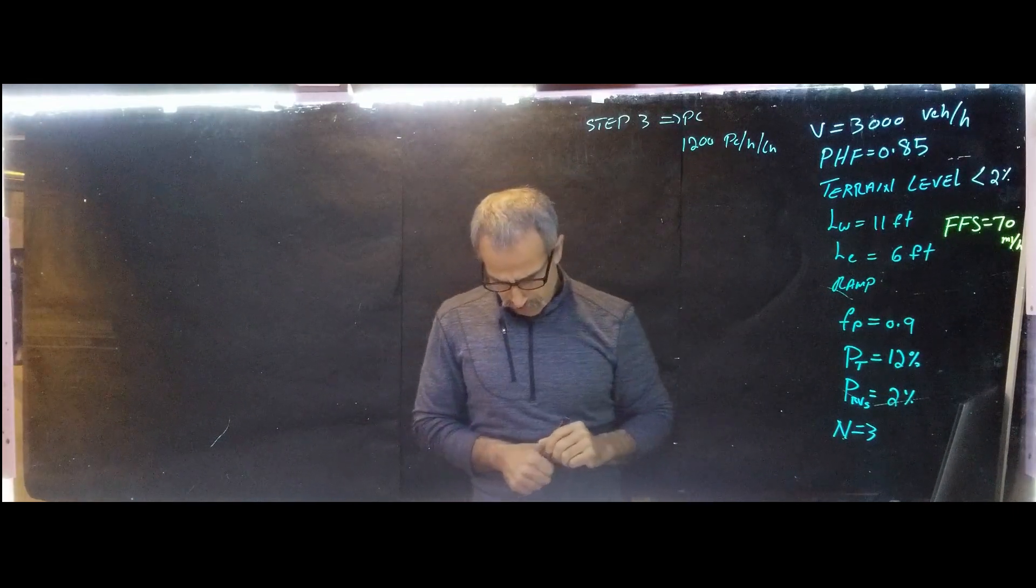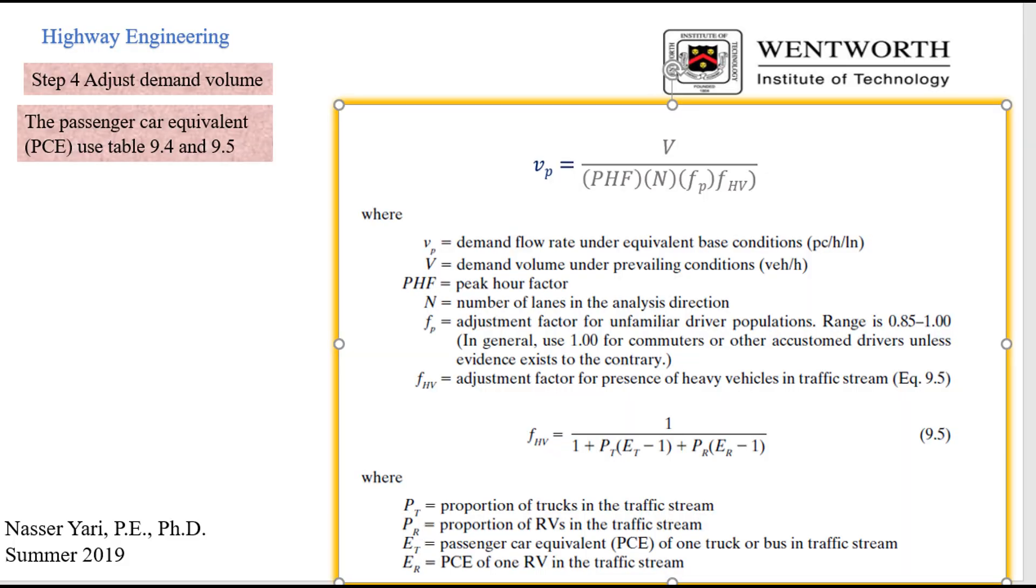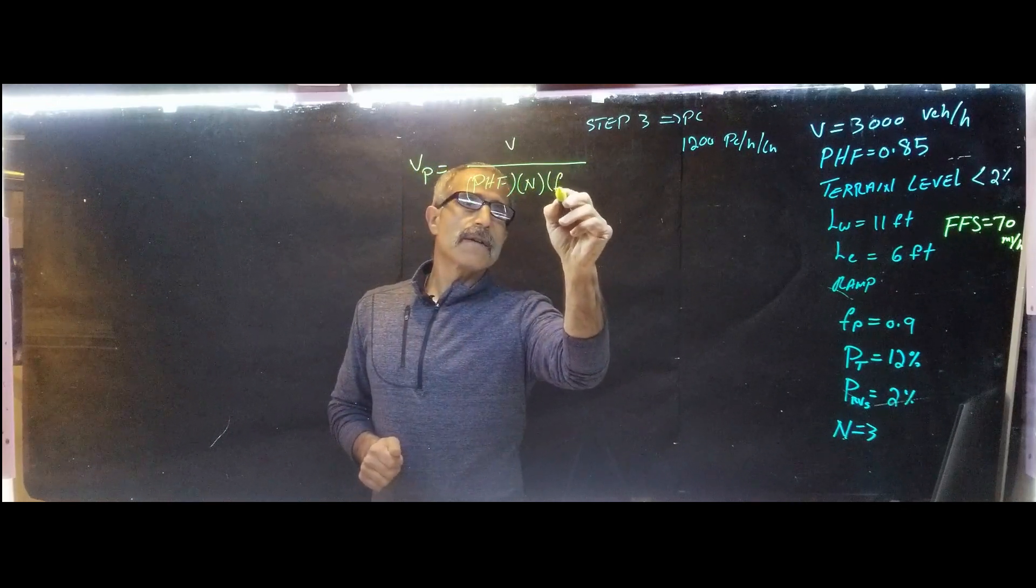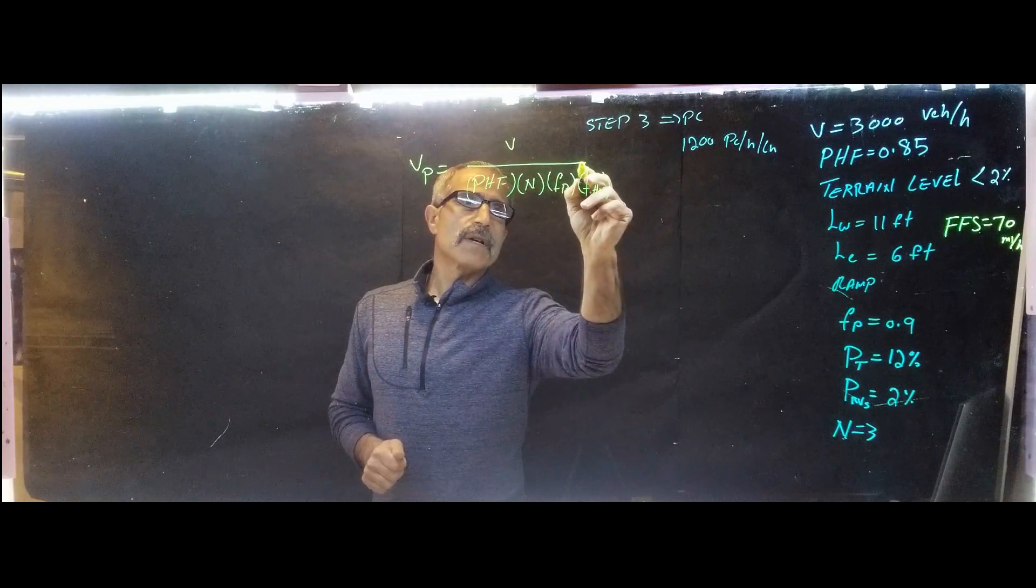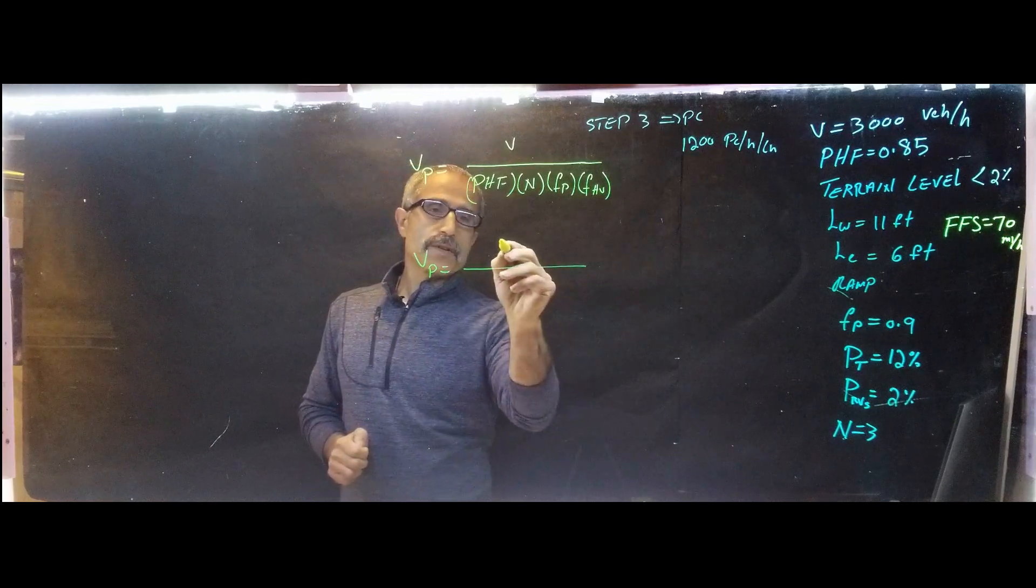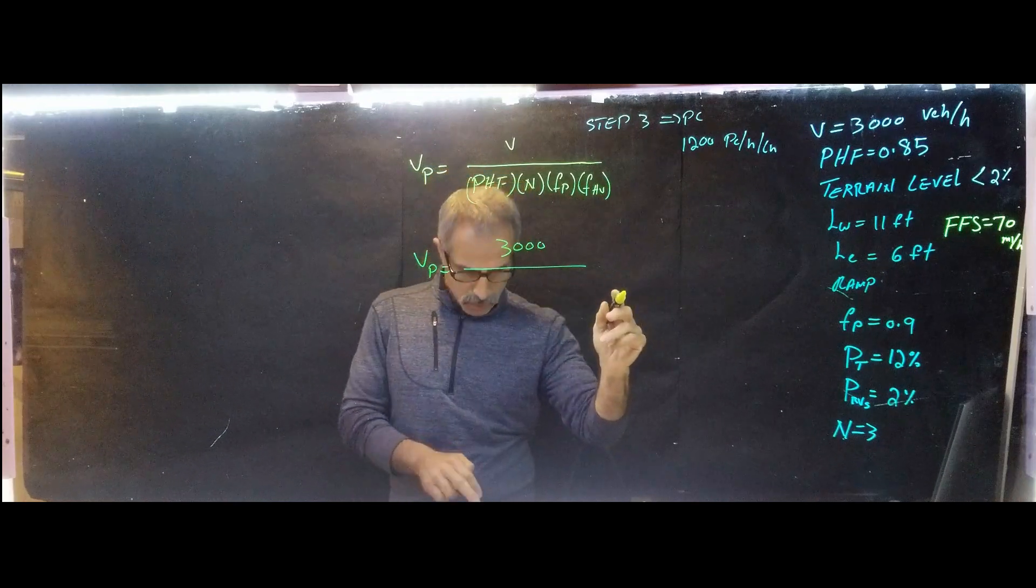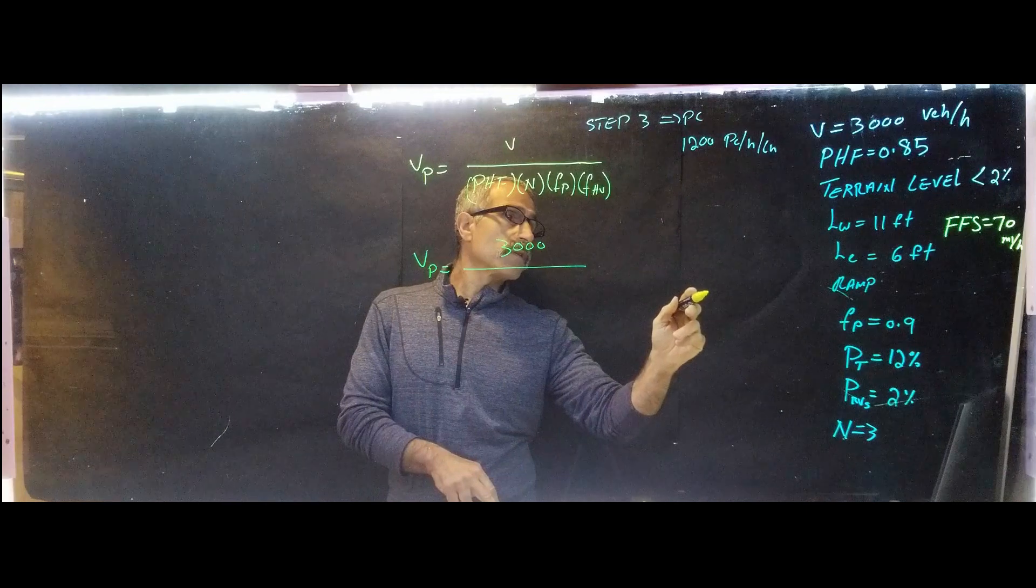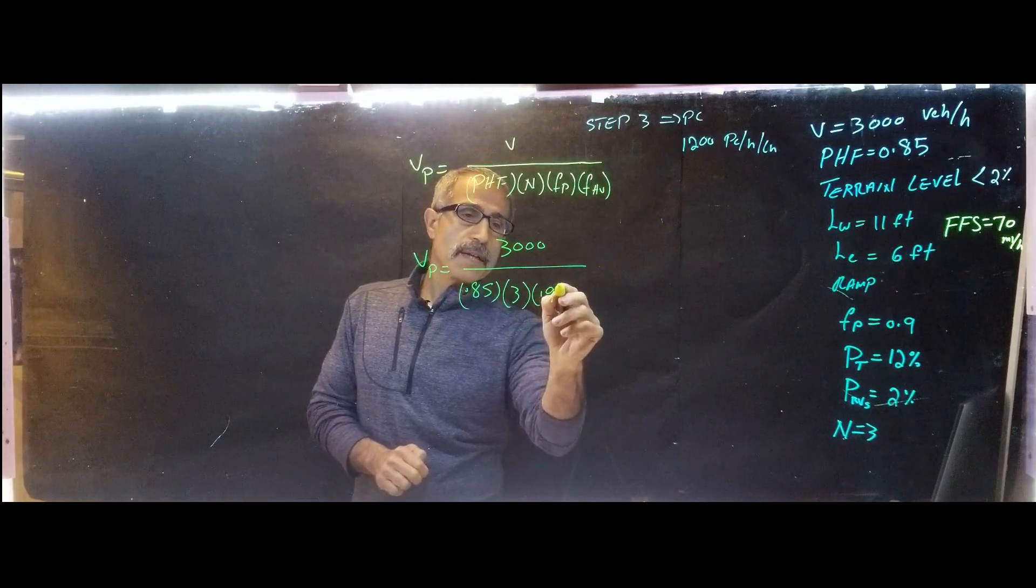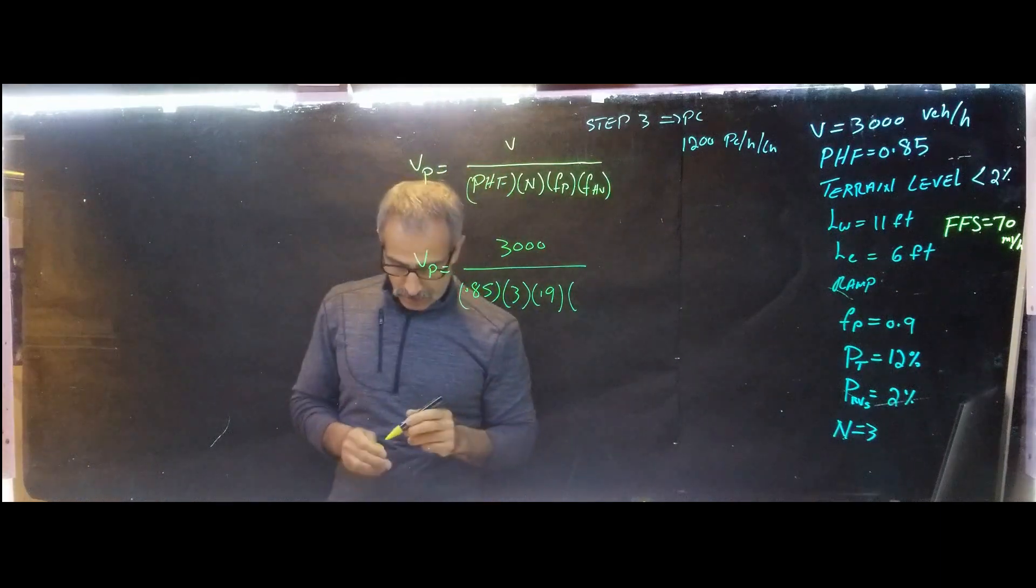And if you look at step number four, you see the formula. Let me bring it up here. There we go. And step number four gives us VP. And that's equal V divided by PHF multiplied by number of lane, and multiplied by FP, and by F for the factor of the larger vehicle. Now we have all this stuff. So our VP comes out. Now it's 3,000. And then PHF, we came out to 0.85. And three-lane FP was 0.9. Oh, we don't know that one. So we've got to figure out FHV. We'll come back here. Let's do FHV.